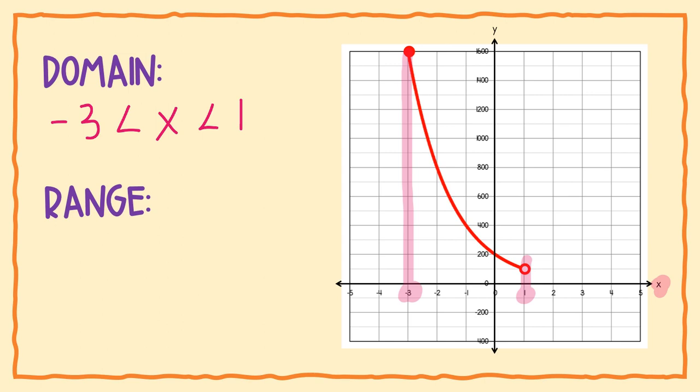The endpoint that's colored in gets an underline on its symbol, making it less than or equal to. So since negative 3 is the colored-in endpoint, that symbol becomes less than or equal to. For range, we look at the y axis — always smallest to biggest, so bottom to top.